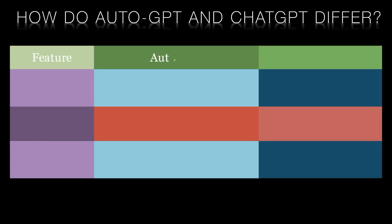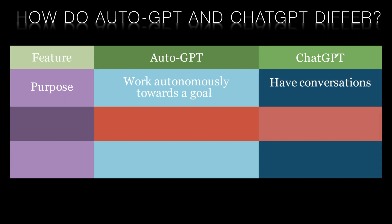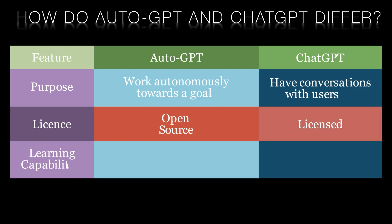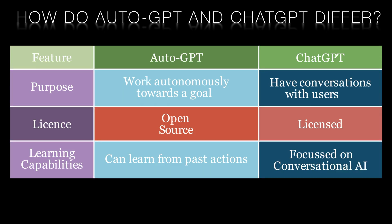Auto-GPT and Chat-GPT differ in several ways. The primary difference is their purpose: Auto-GPT is designed to perform various actions and work autonomously towards a specific goal, while Chat-GPT is designed to have conversations with users. Additionally, Auto-GPT is open source and allows developers to modify its code to suit their needs, while Chat-GPT is a closed system.